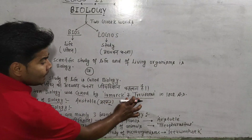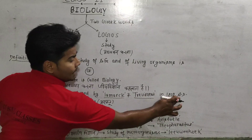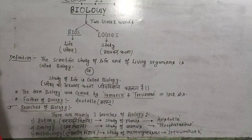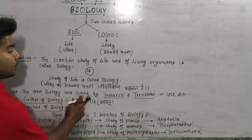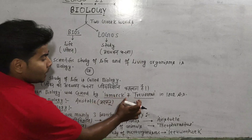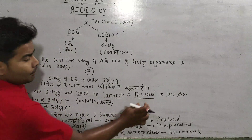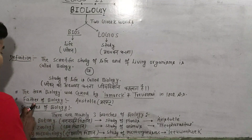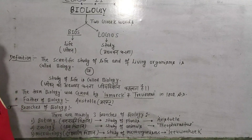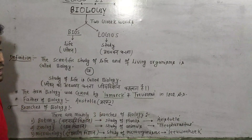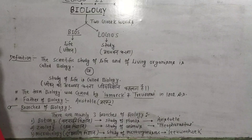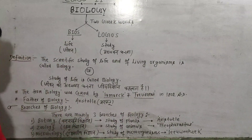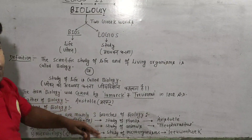1802 AD — AD का मतलब होता है 'After the Death of Christ', अर्थात जिसे हम हिंदी में 'ईस्वी' के नाम से जानते हैं। Biology शब्द Lamarck और Treviranus नामक वैज्ञानिकों के द्वारा 1802 AD में दिया गया था। Father of biology अर्थात जीव विज्ञान के जनक Aristotle हैं, जिन्हें हम अरस्तु के नाम से जानते हैं।